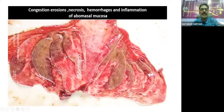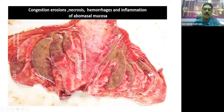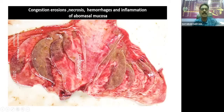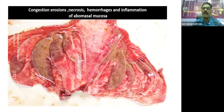Sometimes the eroded portion is affected by secondary bacterial complications like clostridial-type infection, which may lead to multiple necrosis in the abomasum folds. There is erosion, severe congestion, and hemorrhages. The eroded portion may be complicated by bacteria leading to extensive necrosis and severe edema with thickening of the abomasum folds. These types of lesions are generally seen in complicated cases of PPR, where erosions get infected by other bacteria — maybe Clostridia, Salmonella, or E. coli — causing extensive necrosis of the abomasum folds.